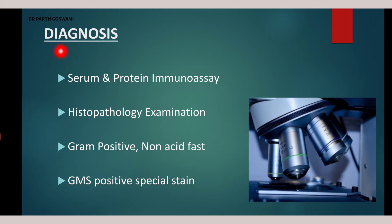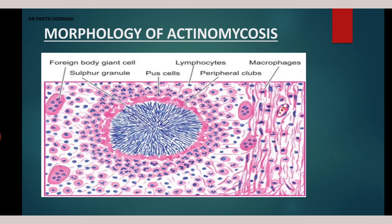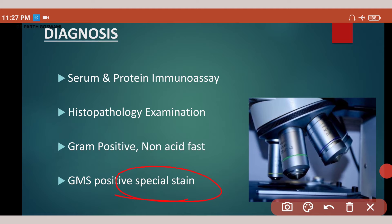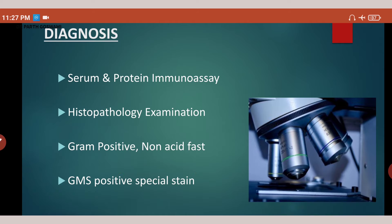For diagnosis of actinomycosis, you can perform immunoassay to detect antigen or antibody in the serum. You can take a swab and do culture examination to identify the causative organism Actinomyces. Histopathology is also conclusive. You can do Gram stain — it is Gram-positive and non-acid-fast. A special stain that can be applied is Gomori methenamine silver (GMS) stain.